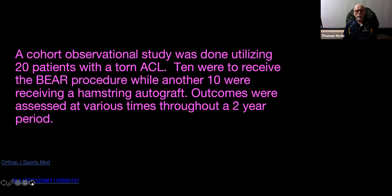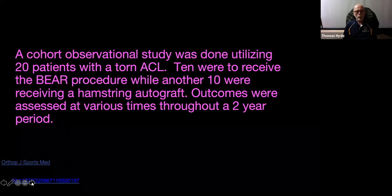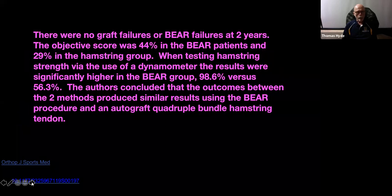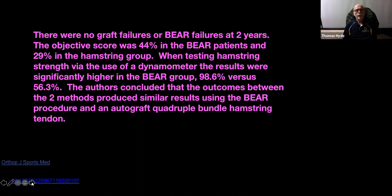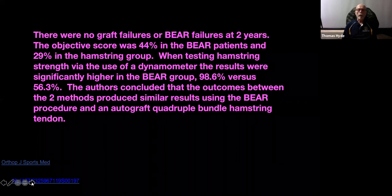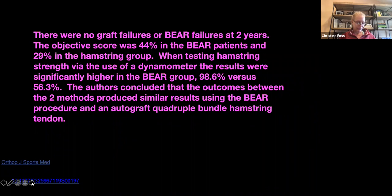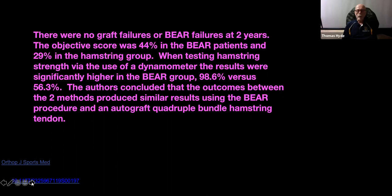A study was done on 20 cohorts with torn ACLs: 10 received the BEAR procedure and 10 had the hamstring autograft, with outcomes assessed at approximately two years. There were no graft failures in the BEAR group at two years. The objective score was 44% in the BEAR patients and just 29% in the hamstring group. When testing hamstring strength with a dynamometer, results were significantly higher in the BEAR group — 98.6% versus 56.3% — and the outcomes between the two methods produced similar overall results.